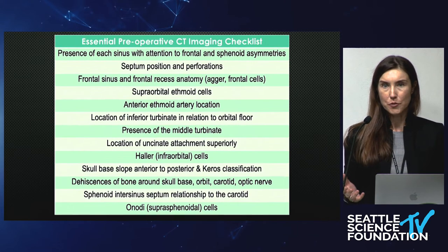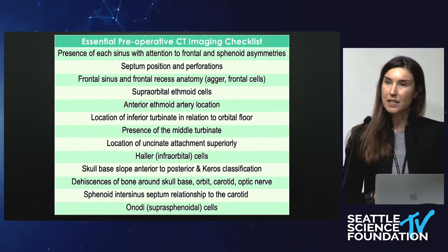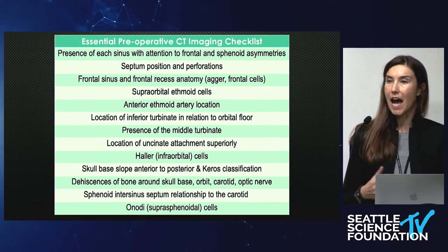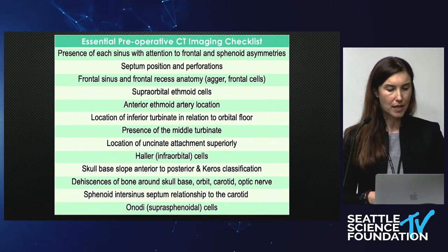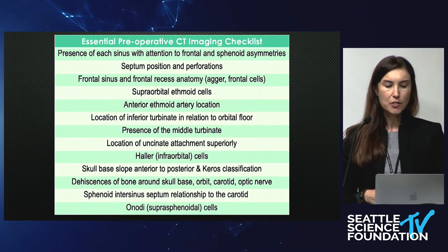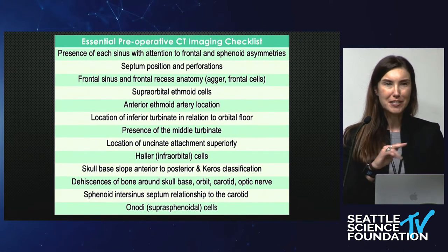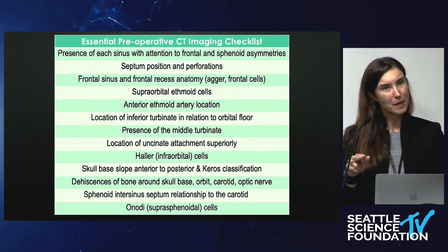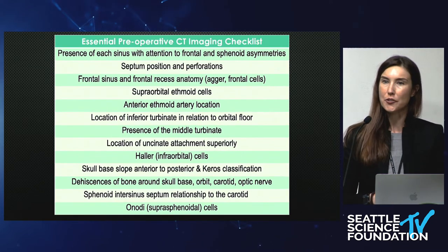The presence of the middle turbinate, which may or may not be present depending on what surgery has been done before. The location of the uncinate attachment superiorly. Any Haller or infraorbital cells, because you want to address those while you're there. The skull base slope, anterior to posterior — every once in a while in a sagittal view you're going to see something a little unexpected, and you want to know about that ahead of time, and your Keros classification.